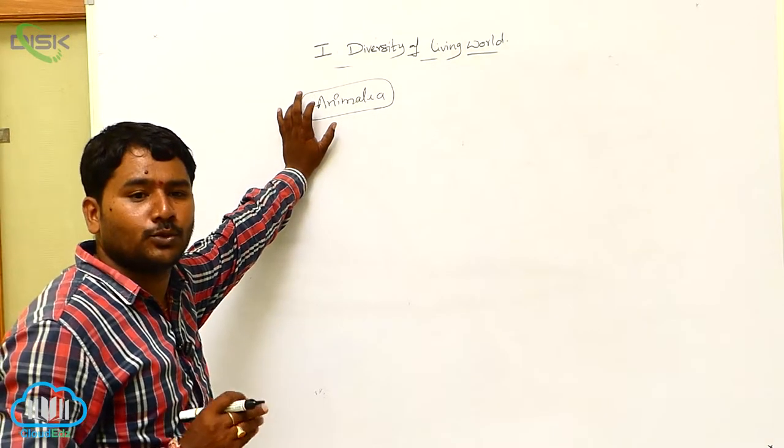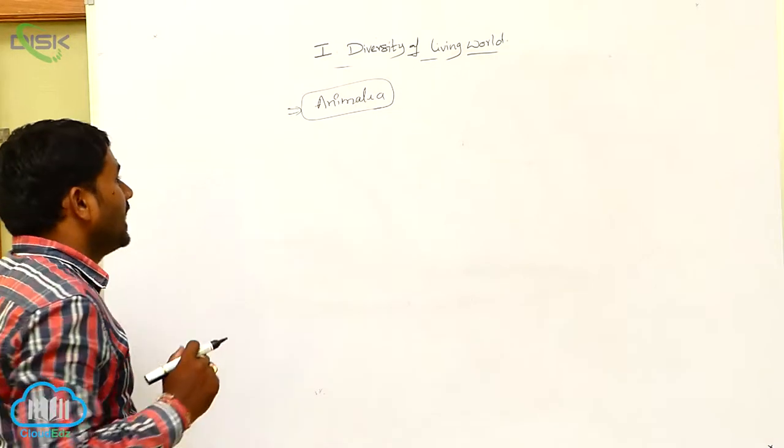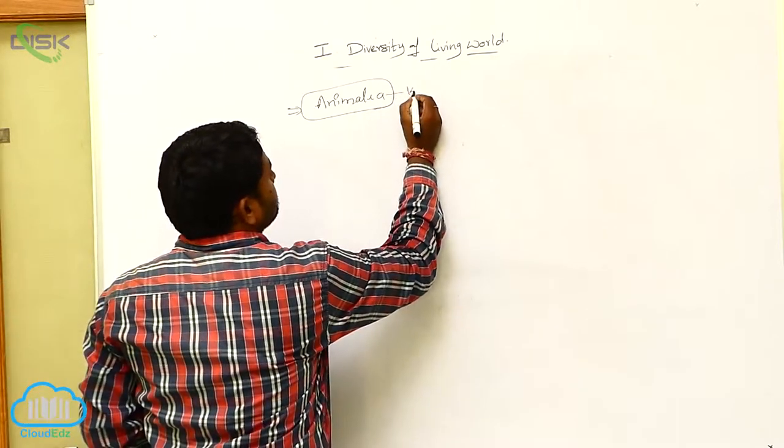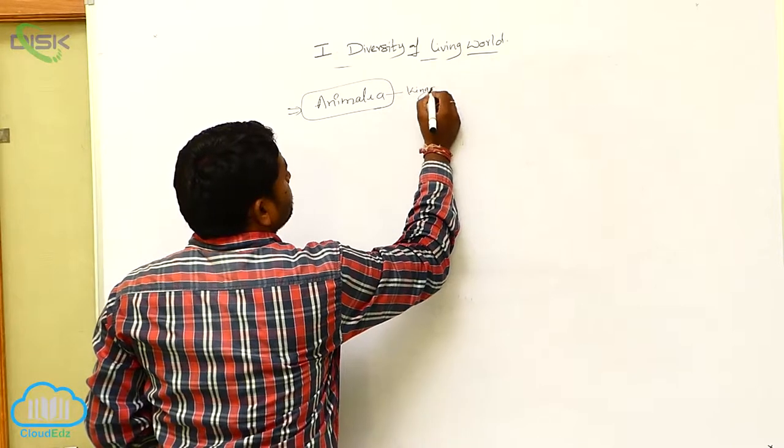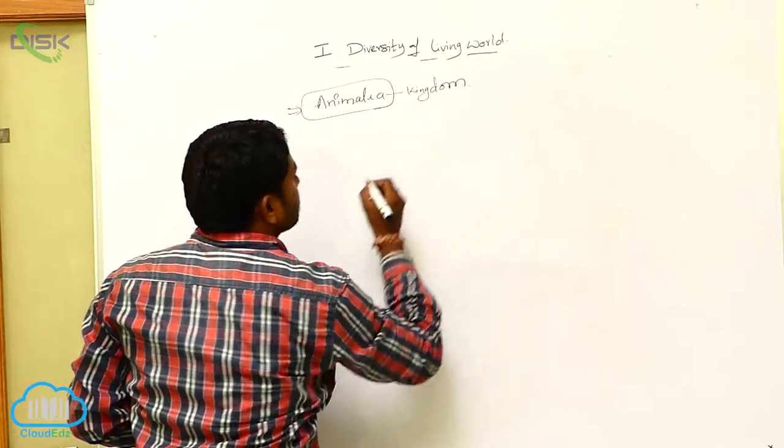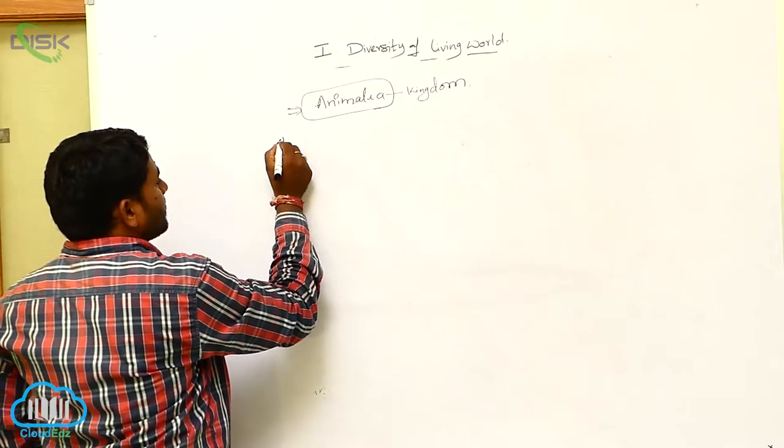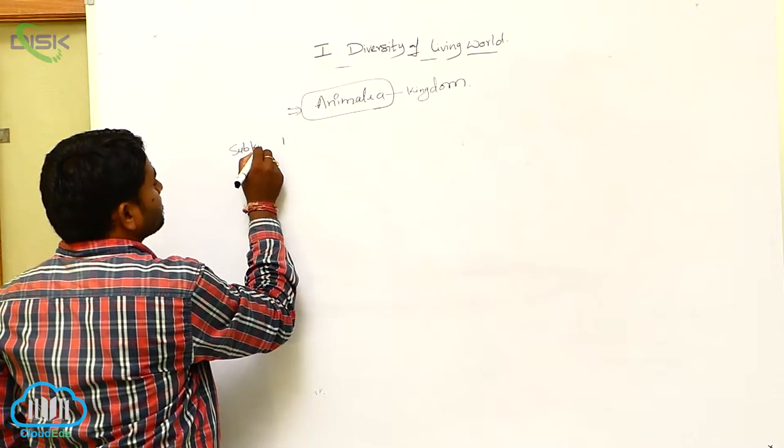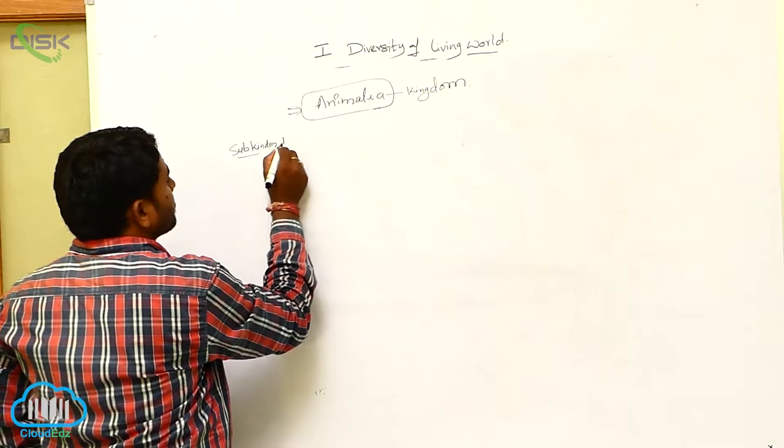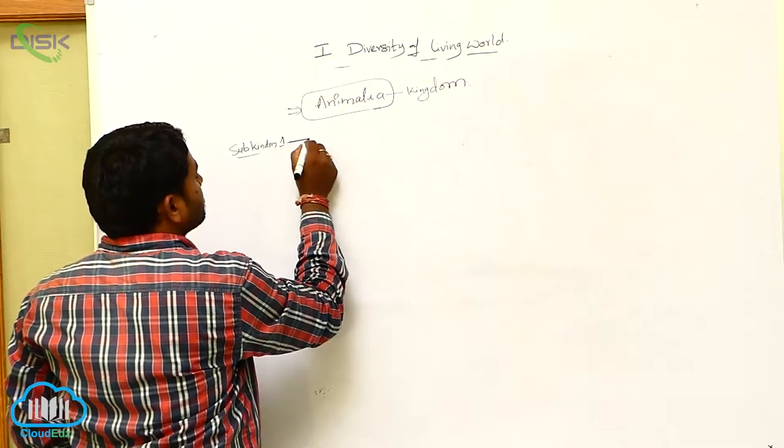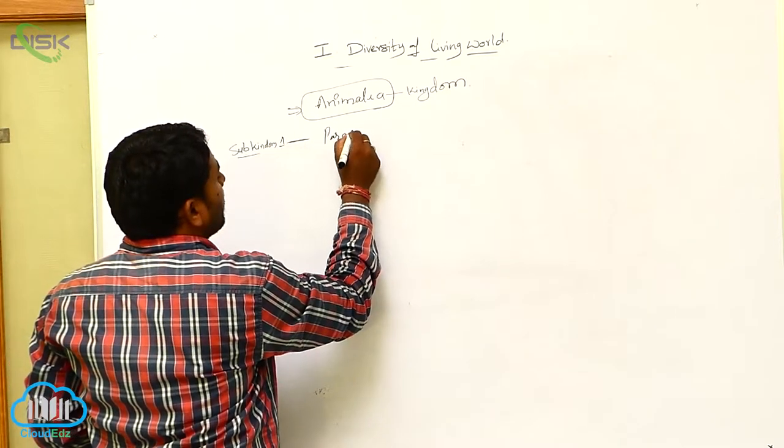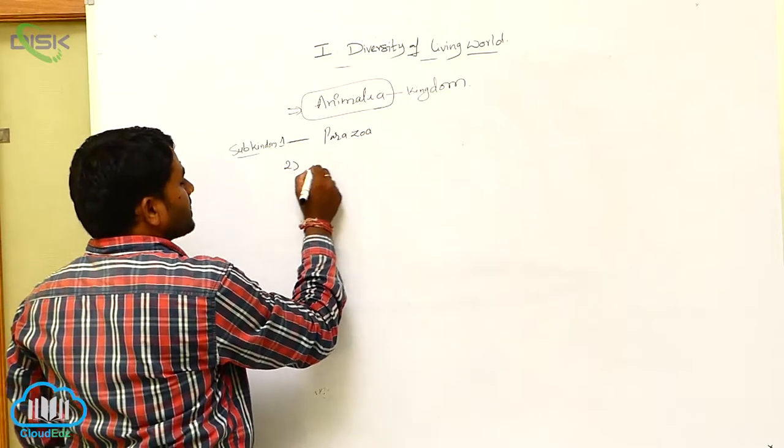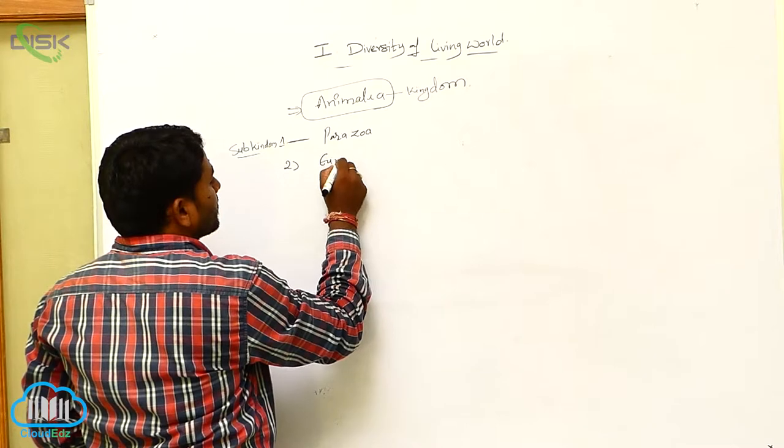Here Animalia Kingdom is divided into two sub-kingdoms. Animalia is divided into how many sub-kingdoms? This is Kingdom. Animalia Kingdom is divided into two sub-kingdoms. Sub-kingdom one: Parazoa. Second sub-kingdom is Eumetazoa.